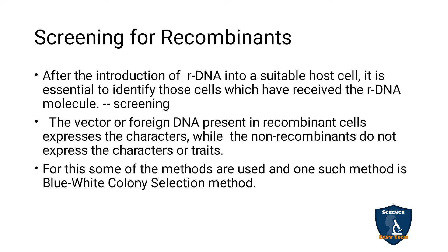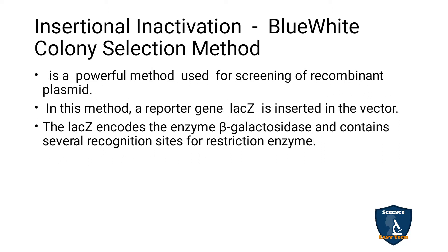One such method is the blue-white colony selection method. Many methods are available, but the very well-known method is the blue-white colony method. It is also called the insertional inactivation method. This is a powerful method used for screening of recombinant plasmid — to find out in which bacterial cells the recombinant plasmid is present.